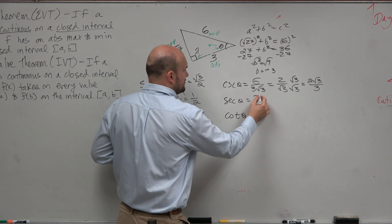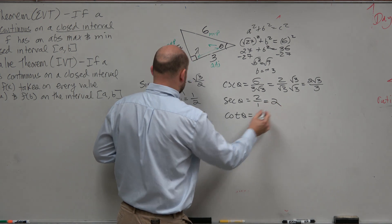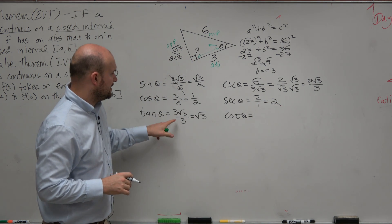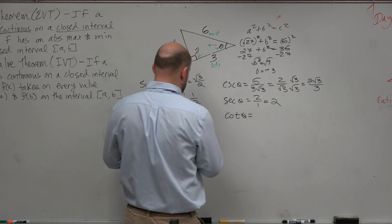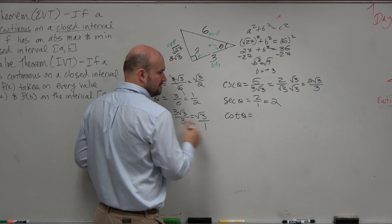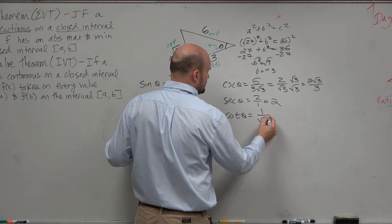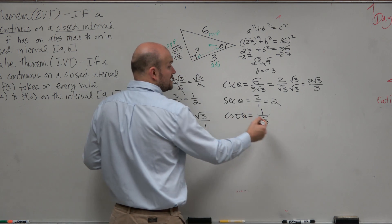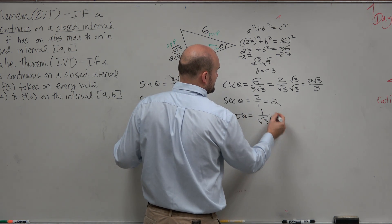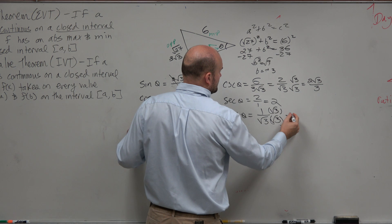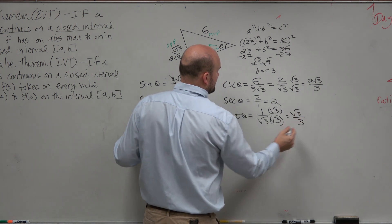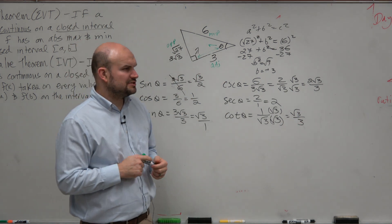For secant, I'm just going to reciprocate 2 over 1, which is just equal to 2. And then cotangent, I'm going to reciprocate. This is really 3 over 1. So why don't we reciprocate this as 1 over the square root of 3. Rationalize the denominator, which we're going to be doing a lot. Square root of 3 over 3. And there's your 6 trigonometric ratios.